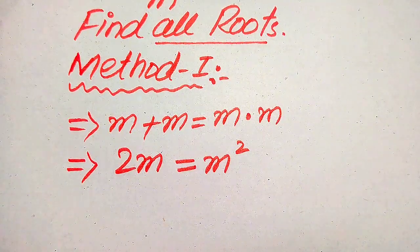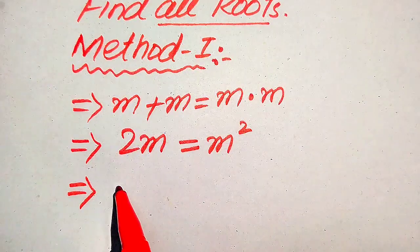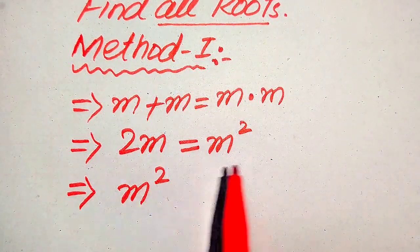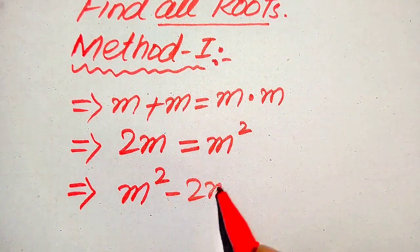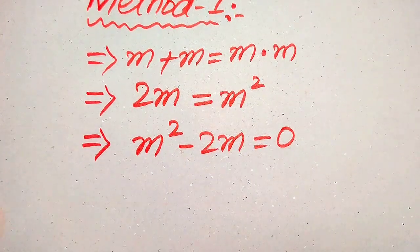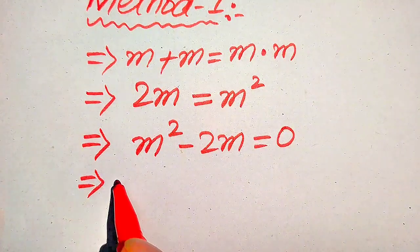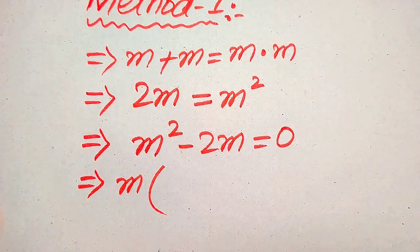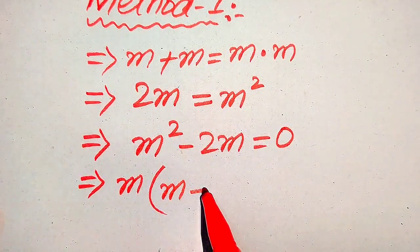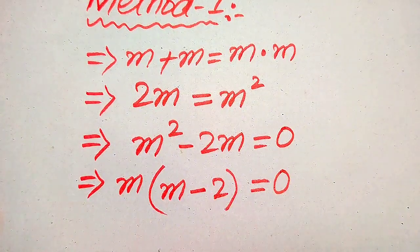In the next step, we move 2m to the right-hand side, so it becomes m squared minus 2m equals 0. You see here both terms involve m, so we take out common factor m, giving us m times (m minus 2) equals 0.